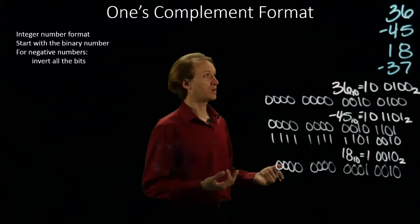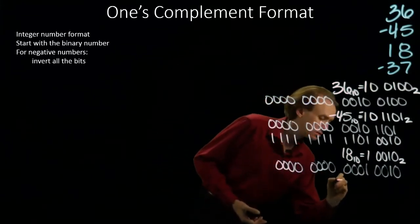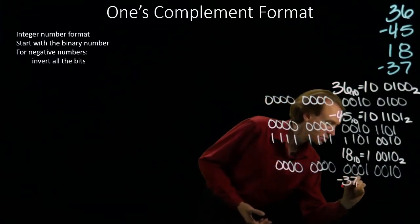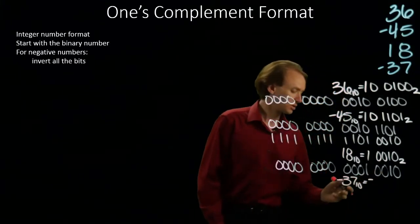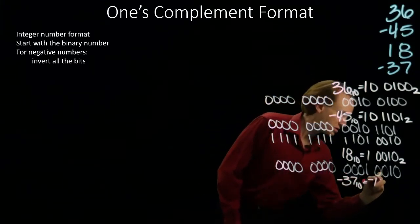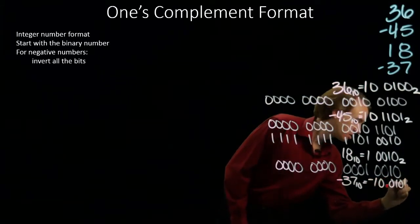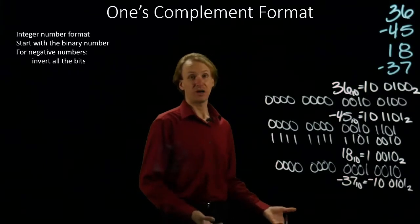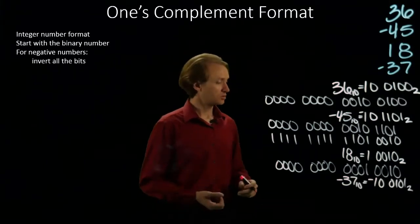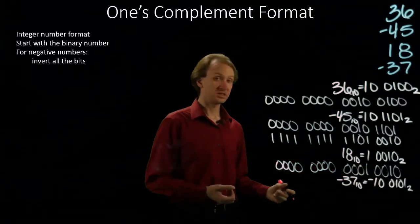The last example is for negative 37. And this is a negative number. 37 is 32 plus 5. So there's negative 37 in binary. I'll start by writing down 37 with 16 bits.